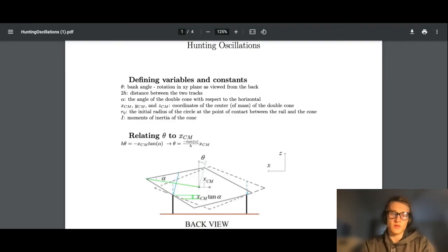Now let's start to go through some of the mathematical analysis. At the start of classical mechanics, we worked on problems with several degrees of freedom and used constraints on our system to remove degrees of freedom to simplify our problem. In this system, our three degrees of freedom are the x and z coordinates of the center of mass of the double cone and the bank angle theta.